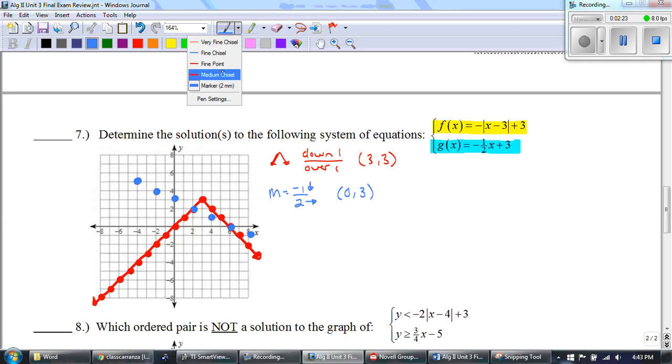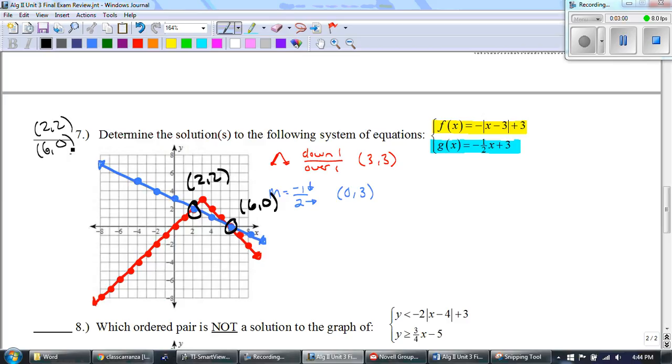And I go down one over two, down one over two, down one over two. And I'm just going to go a couple in the opposite direction. And then I find that there are two points of intersection, and this is why it's super important that we are using straight edges so we can see what those two points are. Our first point is (2,2) and then our second point is (6,0). So those are the two things that we need to write down over here.